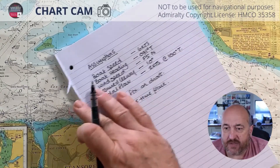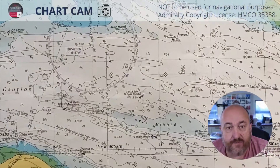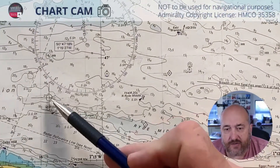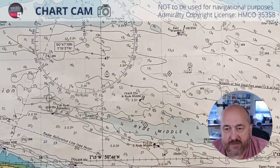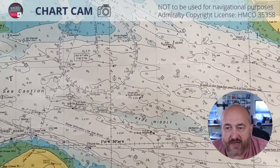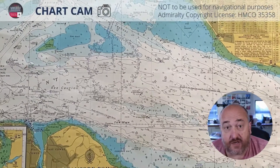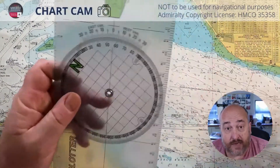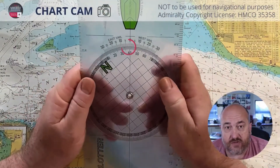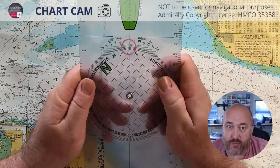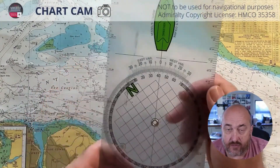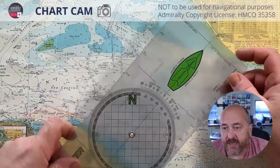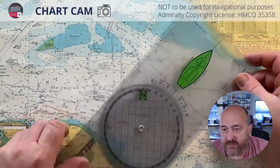We're going to start with a fix on the chart. If you're not sure how to do a fix, look at our video on that too. Because of the scale of the chart, we're going to quarter down our 1-hour vectors, so 6 knots boat speed will give us 1.5 nautical miles of vector. Same with the tide.